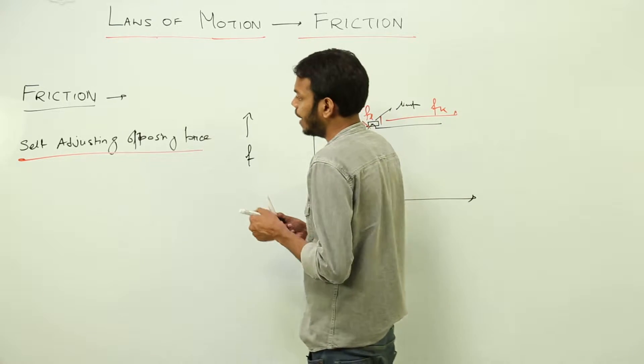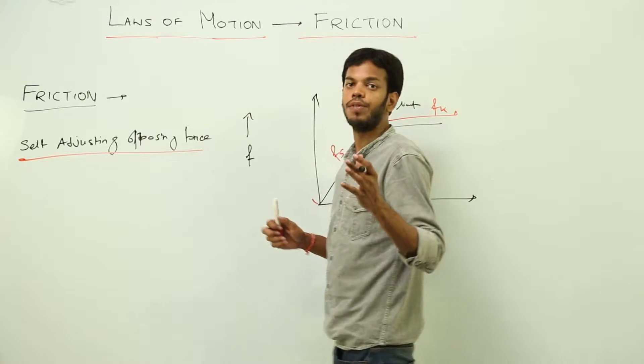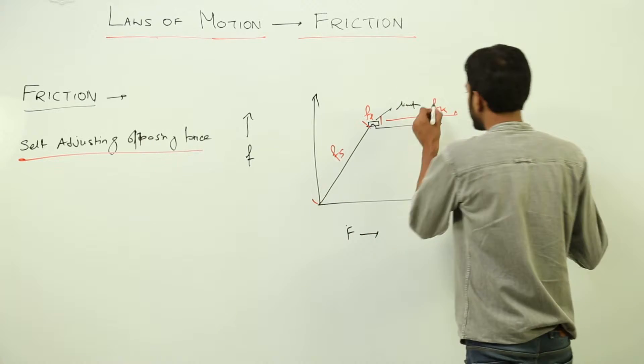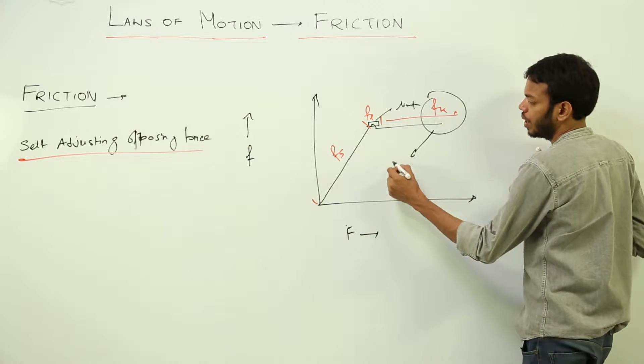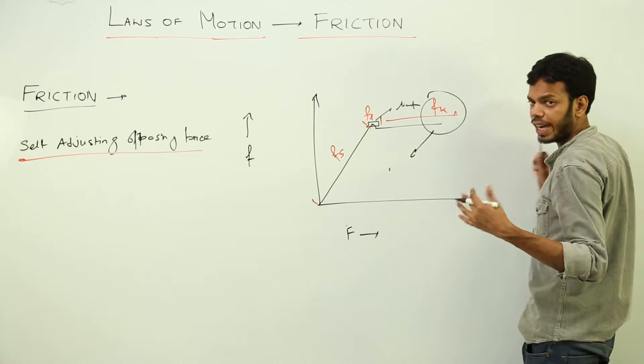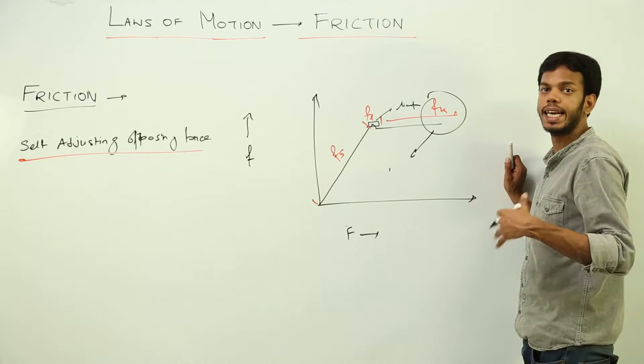Number 2, I have told you that different types of friction are static friction, limiting, and kinetic friction. This kinetic friction is of two types. How can a body move on another body? Either it can roll or slide.